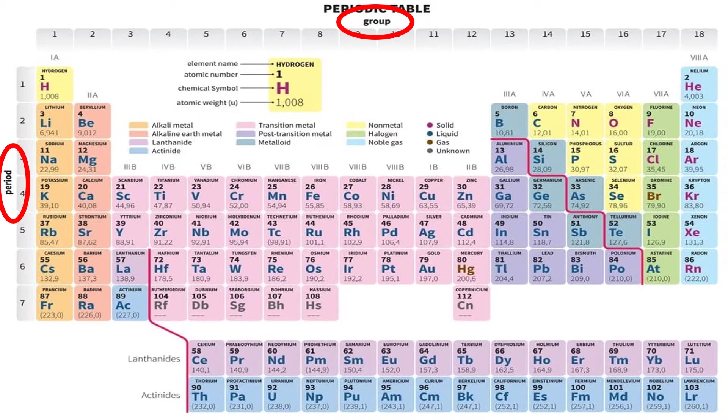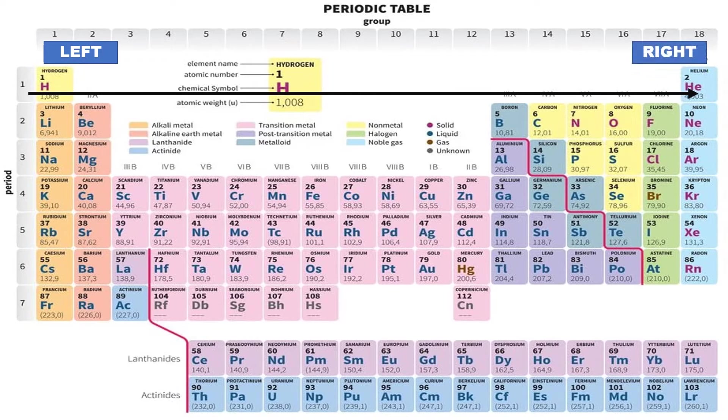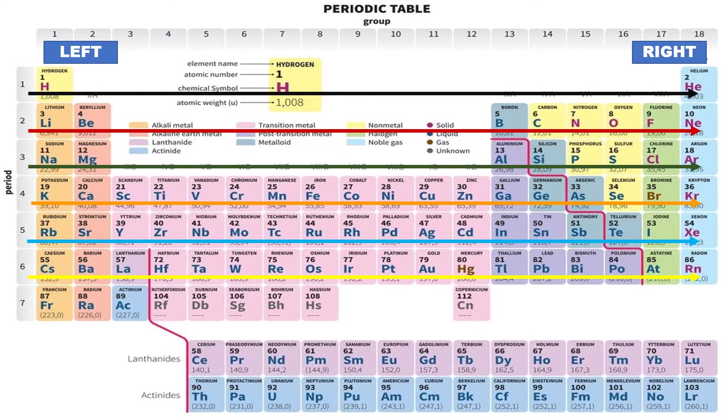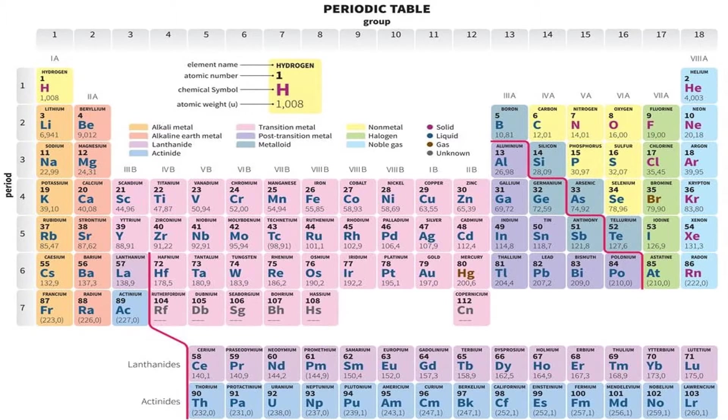There are 6 or 7 periods and 18 groups. Periods are the elements arranged from left going to the right. So the elements belonging to period 1 are hydrogen and helium. Period 2 starts with lithium going to neon. Period 3, we have sodium going to argon. Then next we have period 4, period 5, period 6, and period 7.